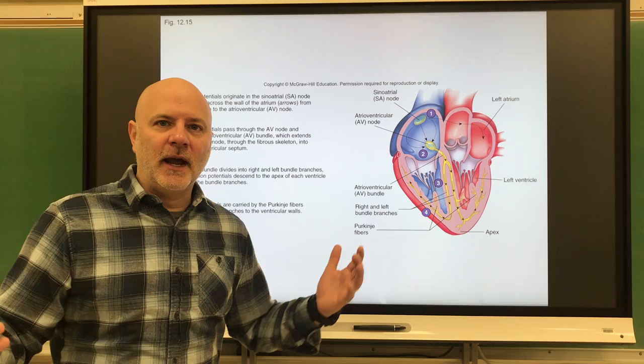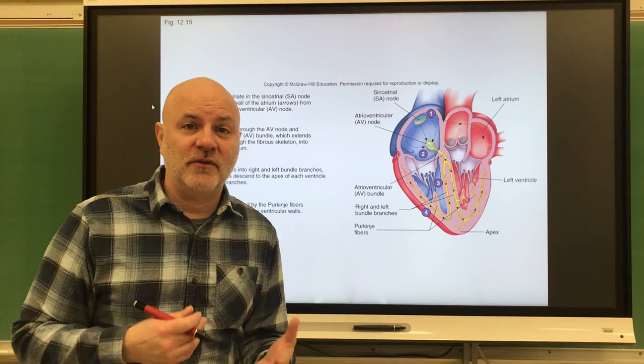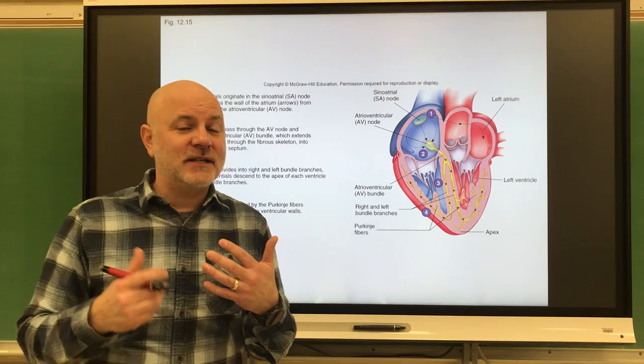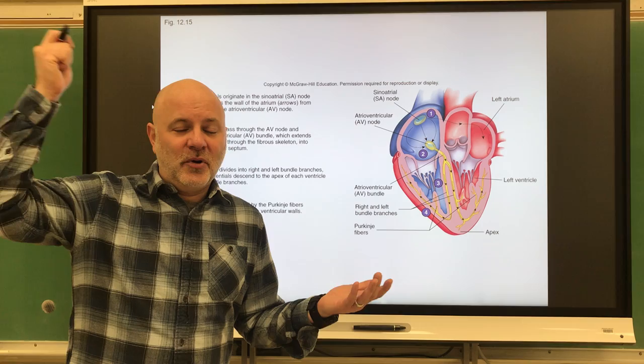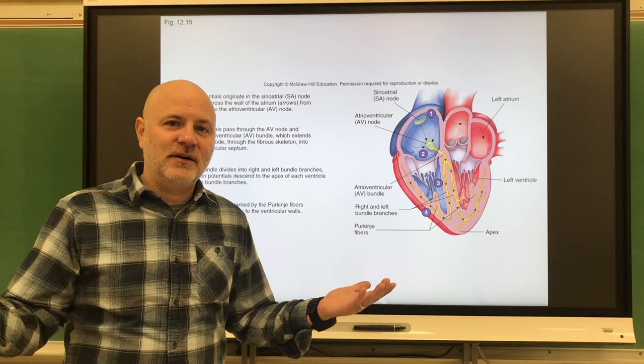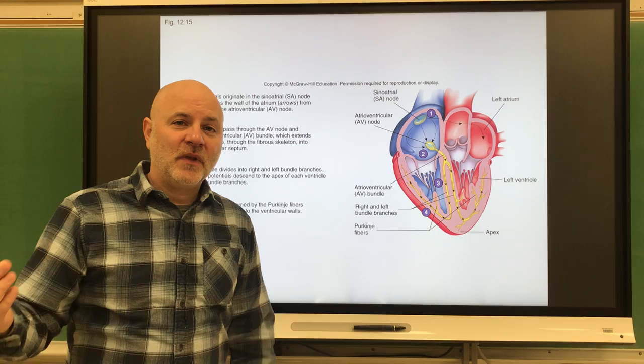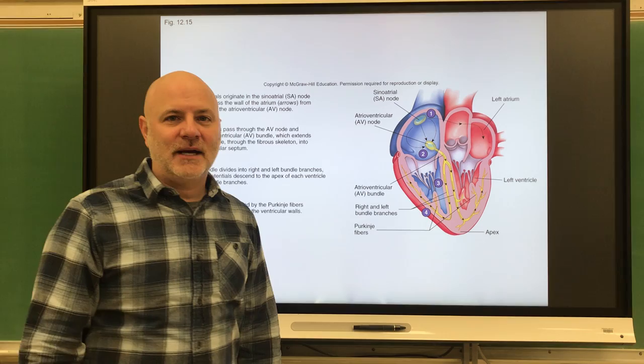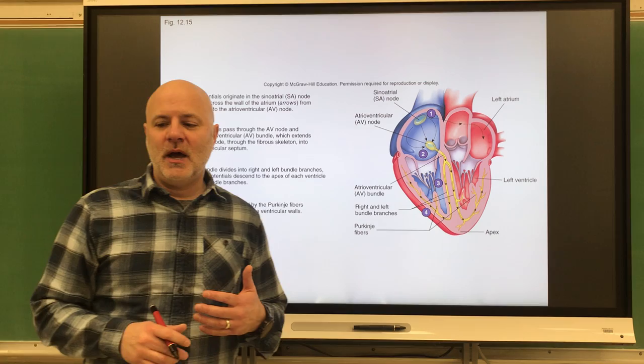For example, if a bear came in here, my heart rate would start increasing because my sympathetic division of my autonomic nervous system would kick in. Then if that bear pulled off its head and it was my buddy Steve getting me again, my parasympathetic division of my autonomic nervous system would bring my heart rate back down to normal.